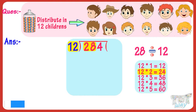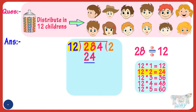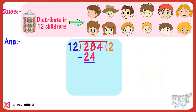24 is the nearest multiple of 12 which is close to 28. So, write 2 in the quotient and write 24 below 28. Now, subtract 24 from 28. We get 4.